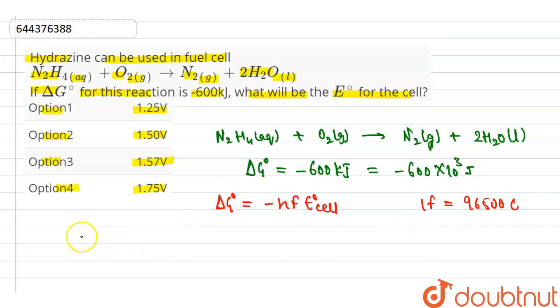Now we find the n factor for this reaction. The n factor is 4 because hydrazine changes into nitrogen plus electrons, so clearly the n factor is 4.